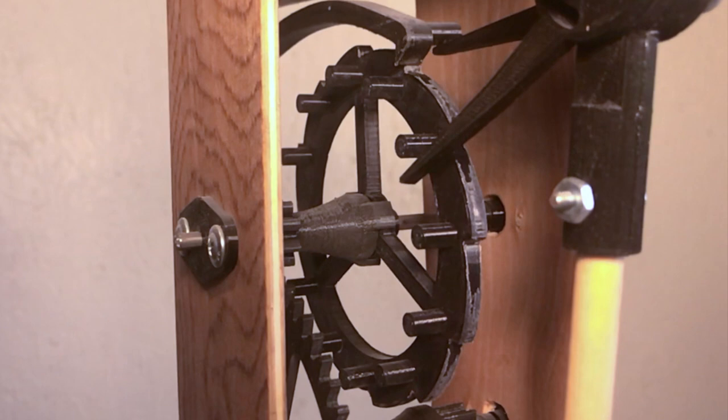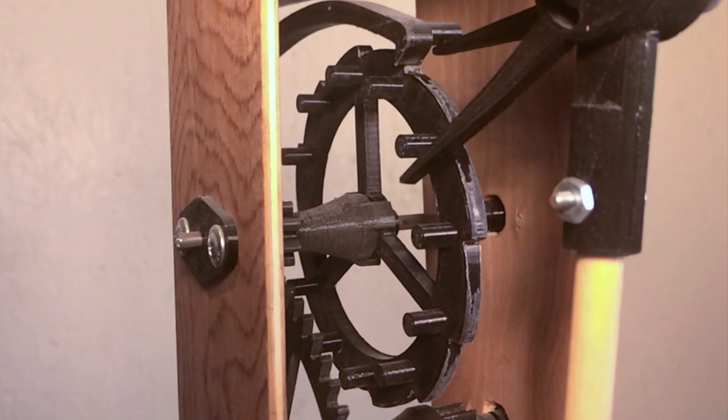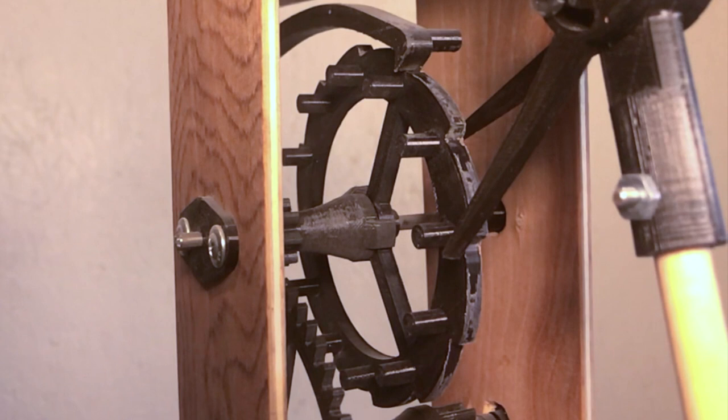The pole lifts the ratchet. The escape wheel pushes on the pendulum. And gravity swings the pendulum back. There's a new cycle every second.